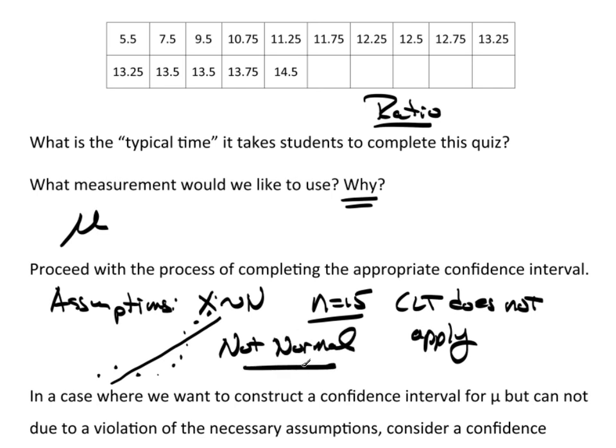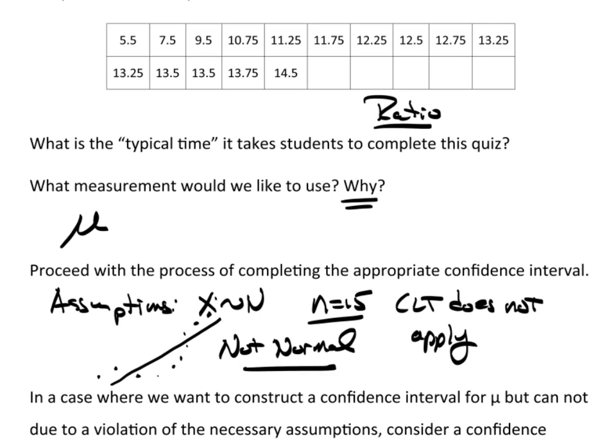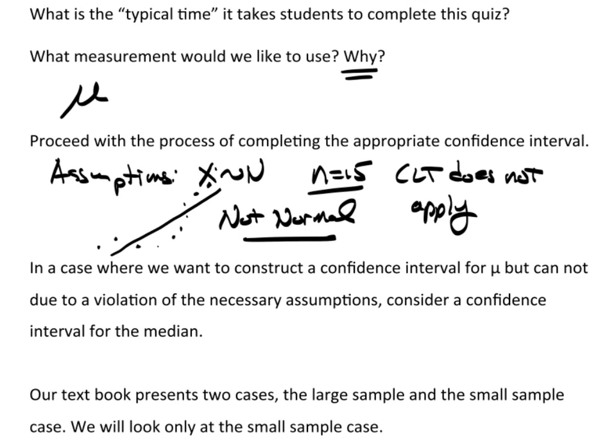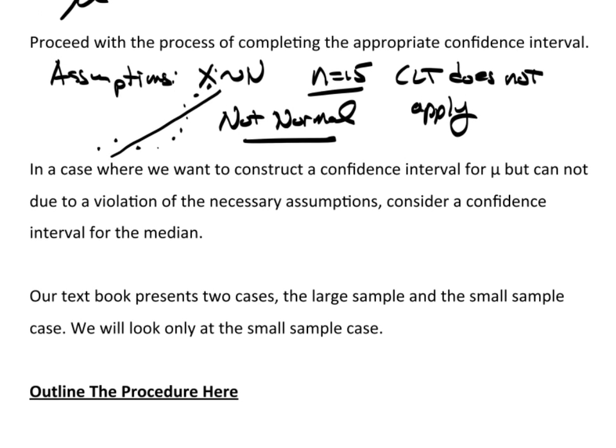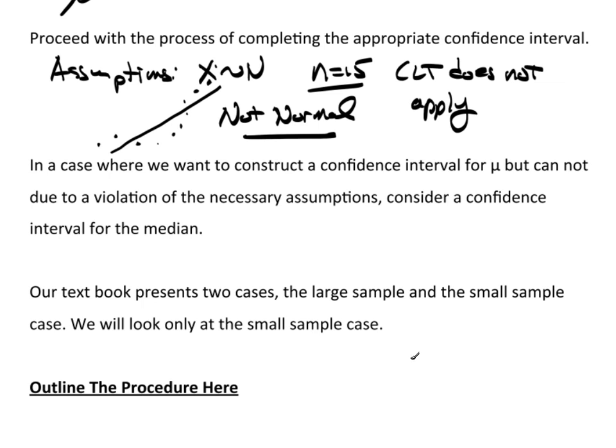Everything we've done so far is exactly what we do if we're constructing a confidence interval for the mean. In cases where we want to construct a confidence interval for mu but we can't due to violations of the necessary assumptions—which we just had here, this is a gross violation of the normality assumption—we're going to consider a confidence interval for the median. We're going to work with theta instead.